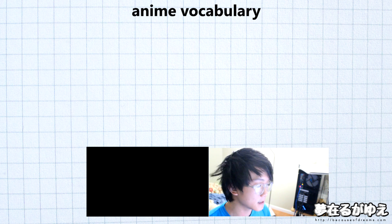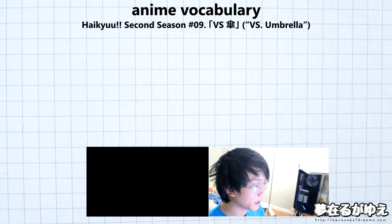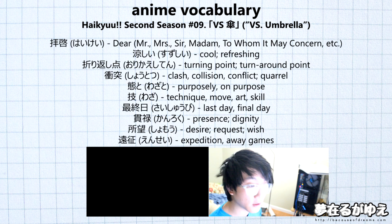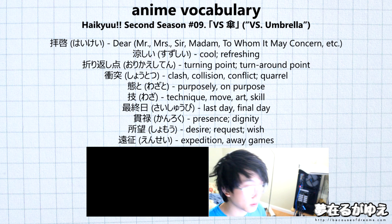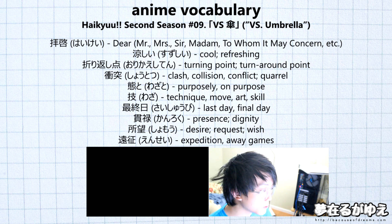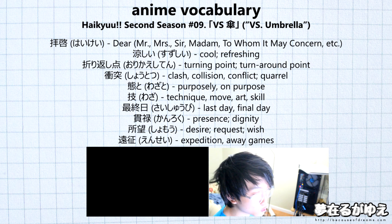The episode that we're going to be looking at today is the 9th episode of Haikyuu Season 2. This episode is titled 'Versus Kasa,' and kasa is going to mean umbrella. So basically what we have for this video is a vocabulary list of 10 different vocabulary terms, and we're going to have example sentences for each one of them. The example sentences are going to be the sentences uttered in the actual episode, and here in the beginning we'll show all 10 of them just in case you know all of them already. But for those who do not know the words and want to learn them, continuing is advised. So now let's move into our first word.